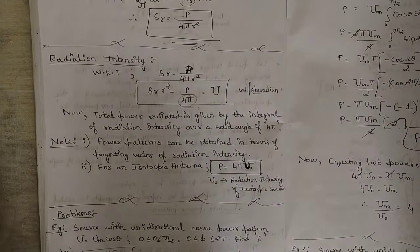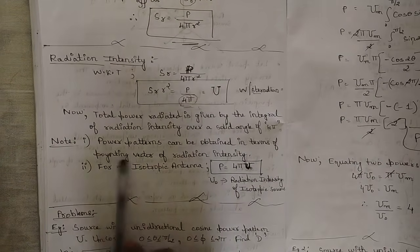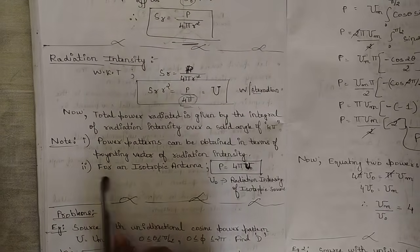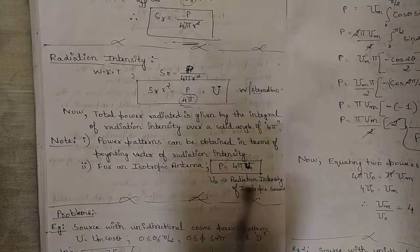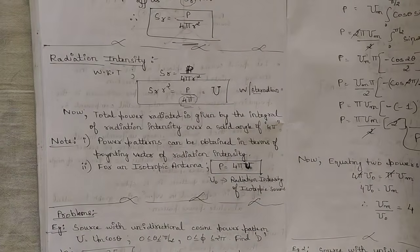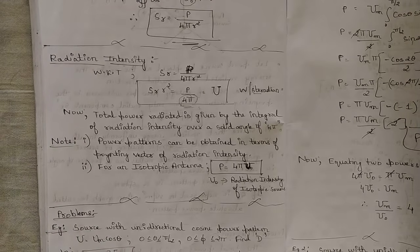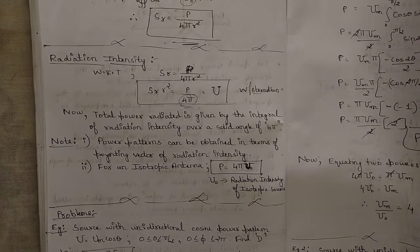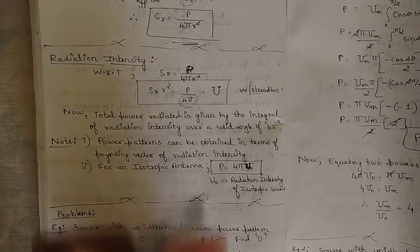Two important notes: first, power patterns can be expressed in terms of Poynting vector or radiation intensity. Second, for an isotropic antenna, P = 4π U₀, where U₀ is the radiation intensity of an isotropic source. Remember these formulas as they will be used in upcoming problems. In this video we discussed power pattern, power theorem, and radiation intensity. In the next video we will solve problems on these concepts to make radiation intensity fully clear. Stay tuned, like this video, and subscribe to our channel.